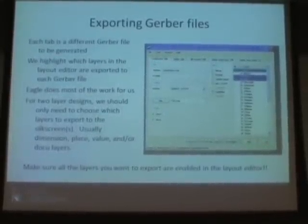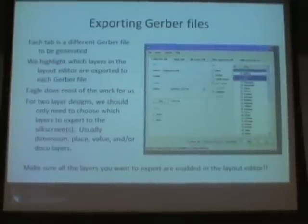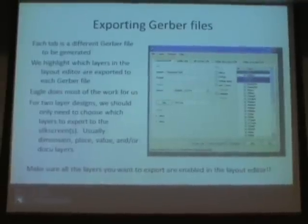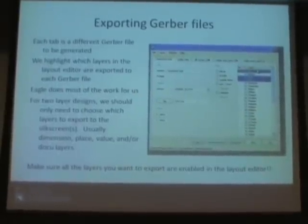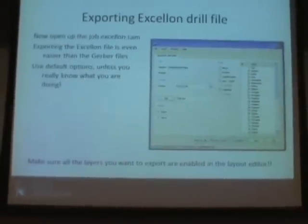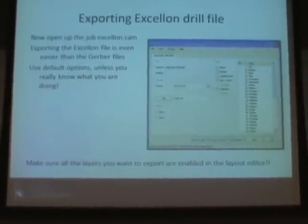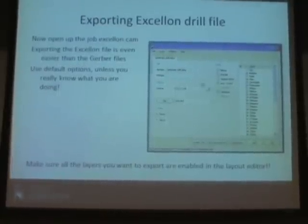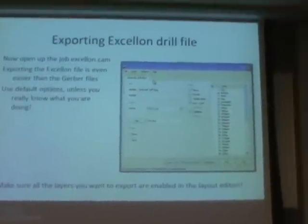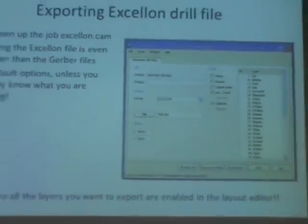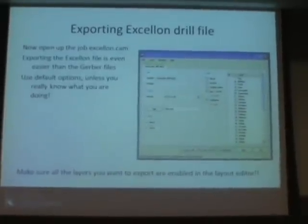Also, in the layout, always make sure all your layers are enabled and visible before doing this — otherwise, even if you highlight them in the CAM processor, they won't export. Kind of a bug in Eagle, but you have to make sure. For Excellon drill files it's the same thing: open the other job file, you'll have only one tab and one file to export. Unless you really know what you're doing with coordinate systems and leading/trailing zeros, just leave it as-is and export.